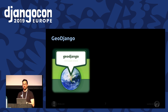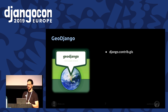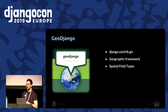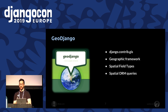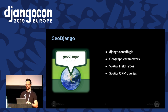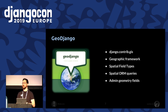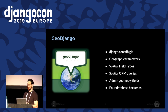What's GeoDjango? GeoDjango is a contrib module that transforms Django into a geographic web framework. It provides new special field types you can use on your models. GeoDjango adds special queries to the Django ORM — for example, you can find a particular point in an area. GeoDjango extends the Django admin with support for editing geometry fields. And finally, GeoDjango provides four special database backends.